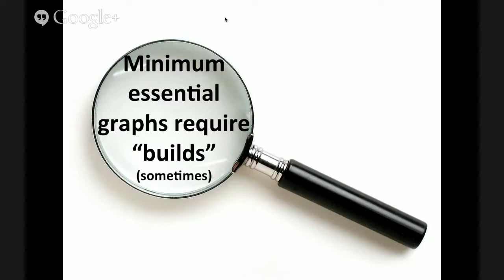A lot of people ask me about animation. There are two types. One is building — bringing in pieces of a graph or slide incrementally. The other is animation where things roll, turn, or graphically come in. That sort of animation — things moving just for moving purposes — is an absolute no-no. The only time you want something moving is if it adds to the meaning, like showing cell migration. Otherwise, never use decorative animation.